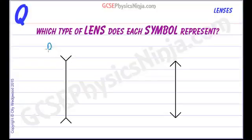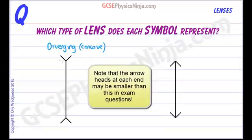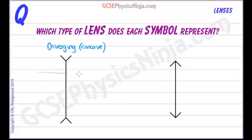This first one is a diverging or concave lens because you can see that it's bulging inwards, and this type of lens will diverge rays away from the principal axis or the principal focus.